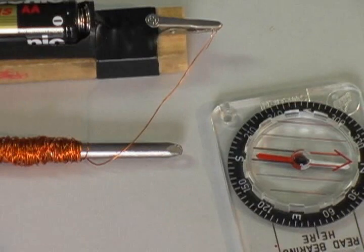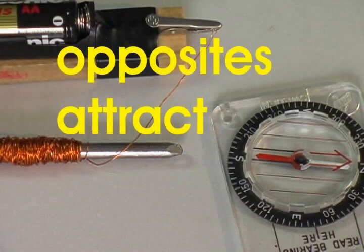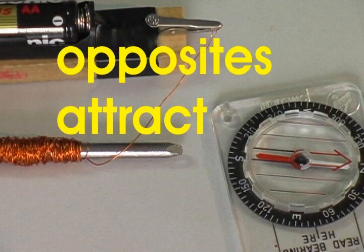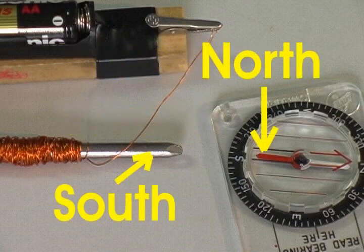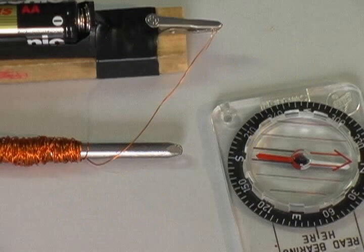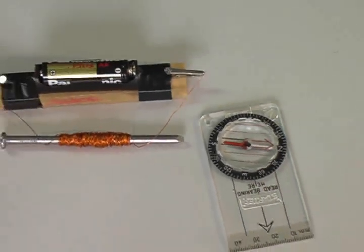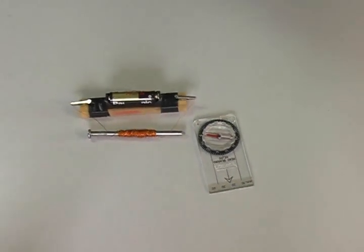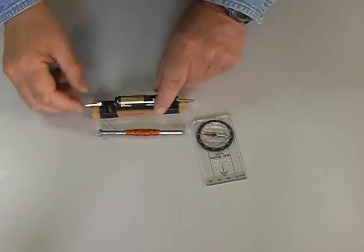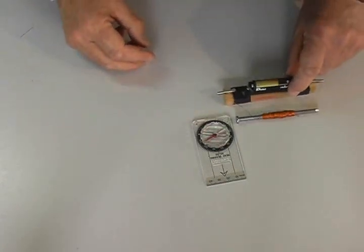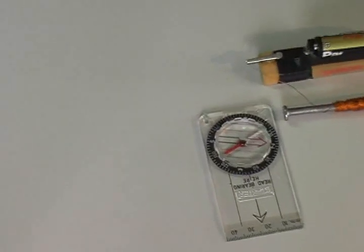We know that opposites attract, so this end of our electromagnet must be its south pole. The compass confirms that the other end of the electromagnet is the north pole.